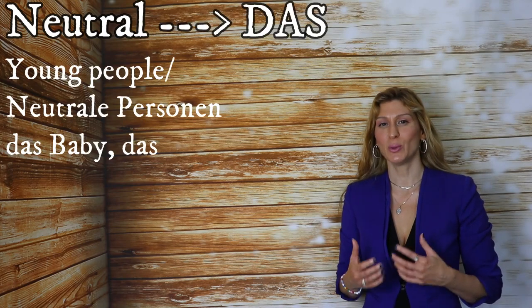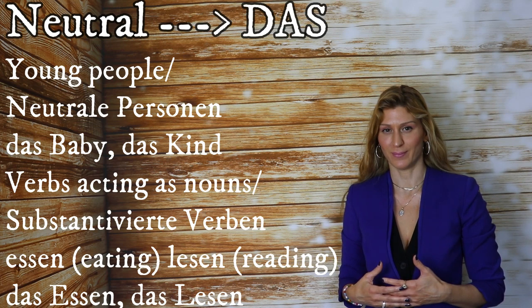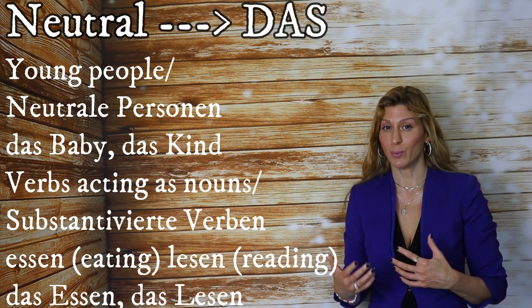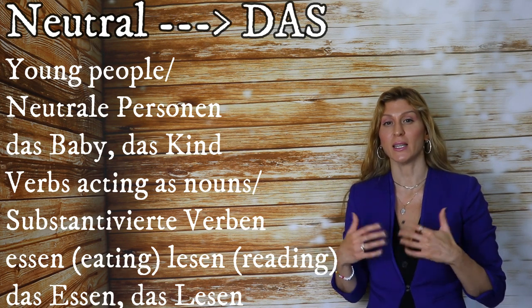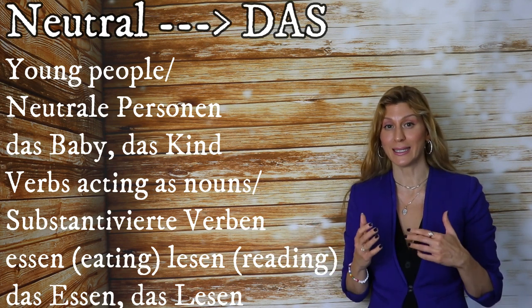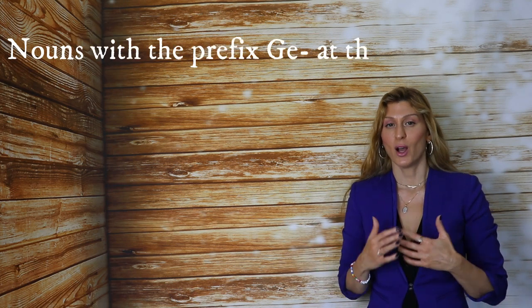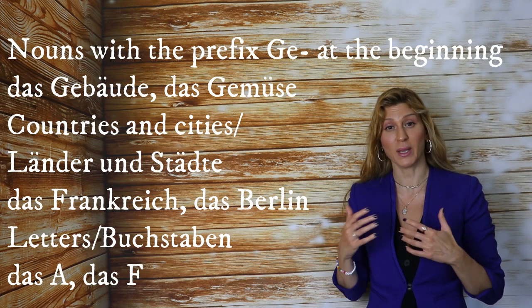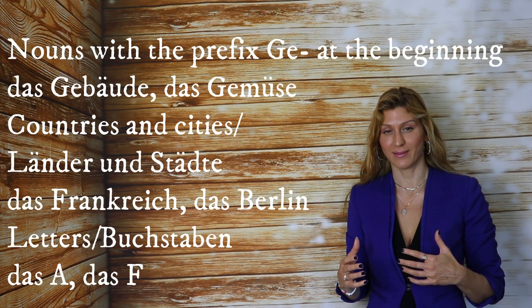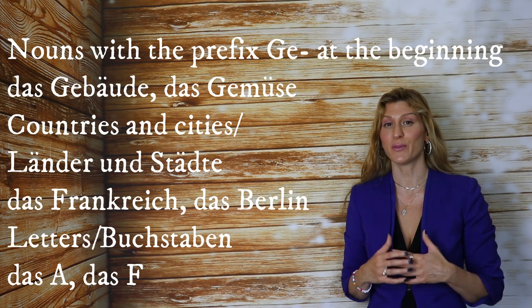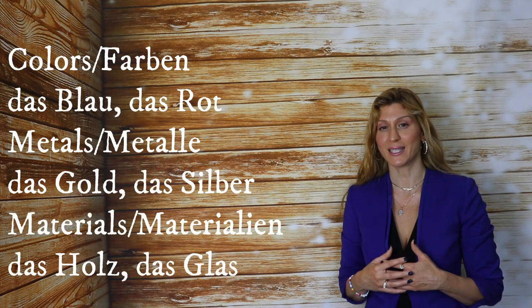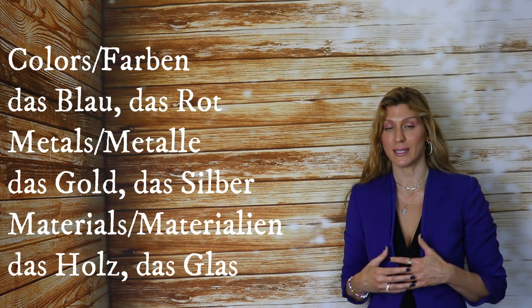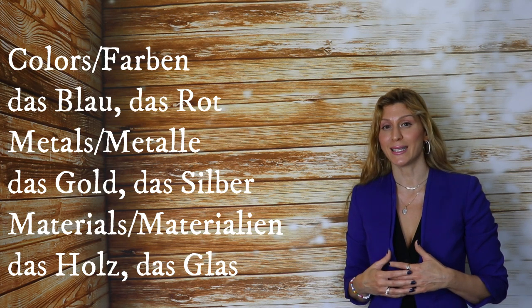Now let's continue with neutral (das). Young people and neutral persons: das Baby, das Kind. When a verb is acting as a noun: das Essen, das Lesen. When a noun has the prefix ge- at the beginning: das Gebäude, das Gemüse. Countries and cities (Länder und Städte): das Frankreich, das Berlin. Letters (Buchstaben): das A, das F. Colors (Farben): das Blau, das Rot. Metals (Metall): das Gold, das Silber. Materials (Materialien): das Holz, das Glas.